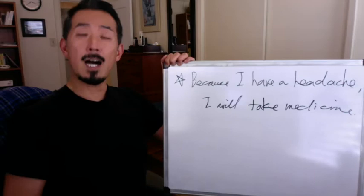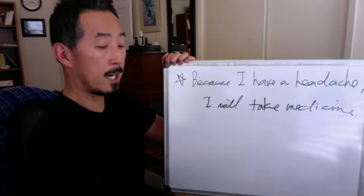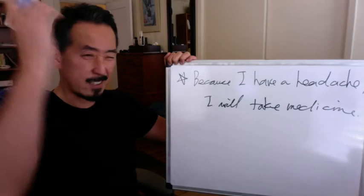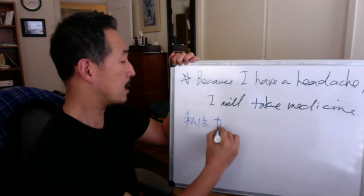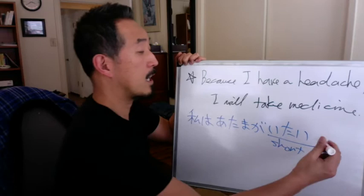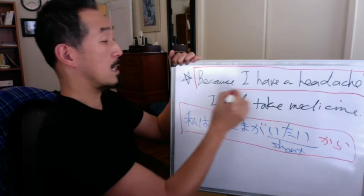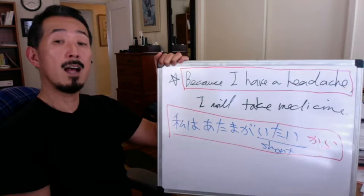Don't make a sentence like 'I will take medicine because I have a headache.' Because I have a headache — reason — I will take medicine. How do you say 'I have a headache'? I have a painful head. 私は頭が痛い — that's the short form. 痛いから. 私は頭が痛いから — because I have a headache.